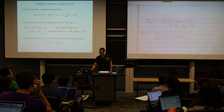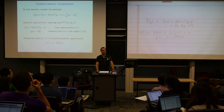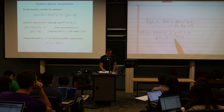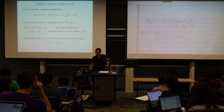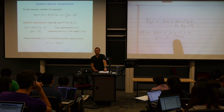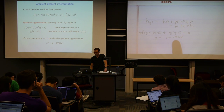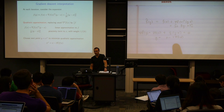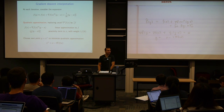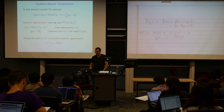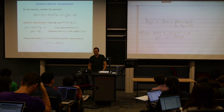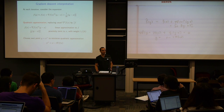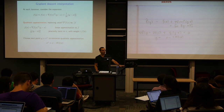By minimizing this quadratic expansion over y, we get the gradient descent update. If t is small, we make a small step — we're placing a lot of importance on staying close to x, since the weight in front of the proximity term is high. If t is big, we're not placing much importance on staying close to x and we're trying to minimize the linear approximation, which takes us far in the direction of the negative gradient.